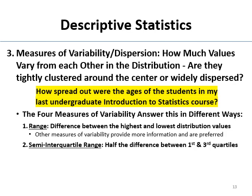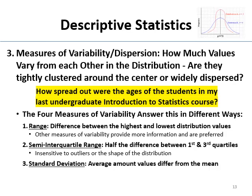The next most sophisticated measure of variability is the semi-interquartile range, or SIR. The SIR is half of the difference between the first and third quartiles — find the score at the third and first quartiles, subtract, and divide by two. It is insensitive to outliers or the shape of the distribution, which makes it good, but it's not as good as the standard deviation when you can use it. The standard deviation is like the mean of the spread of scores — it's the average amount that scores differ from the mean. The standard deviation provides the most information overall about all values in the distribution, so you want to use the standard deviation if you can.